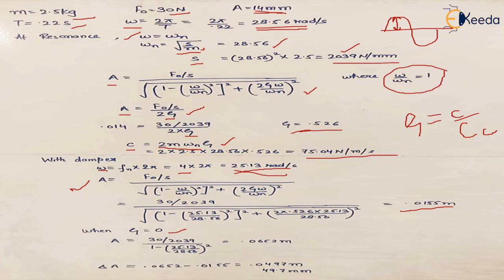Now in case when zeta is equal to 0 that means we are not taking into consideration any damping factor, the equation reduces to this and the amplitude we can easily calculate by putting the values of f0, s, omega and omega n.